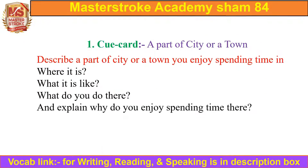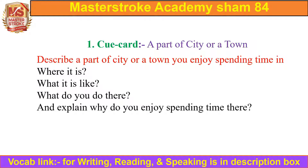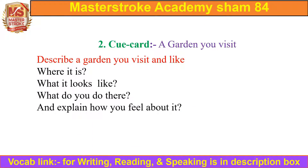The first cue card is 'A part of city or a town' — describe a part of a city or town you enjoy spending time in: where it is, what it is like, what you do there, and explain why you enjoy spending time there. The second cue card is 'A garden you visit' — describe a garden you visit and like: where it is, what it looks like, what you do there, and explain how you feel about it.